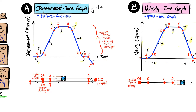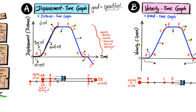Just to recap, the gradient of a displacement-time graph represents the speed or velocity. From 0 to A is a zero gradient, zero speed — the car is at rest. From A to B the steepness increases, so it's increasing gradient and increasing velocity. From B to C the steepness doesn't change, so it's a constant gradient and constant velocity. From C to D the steepness is decreasing, so it's decreasing gradient and decreasing speed.